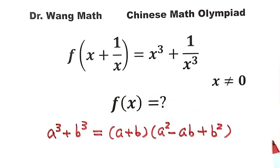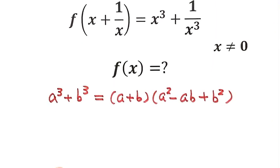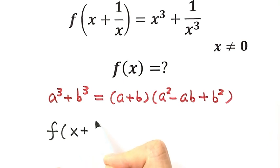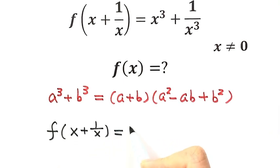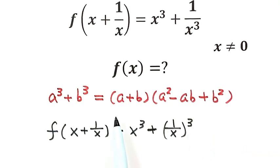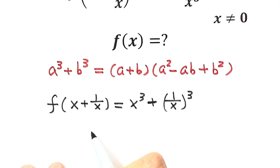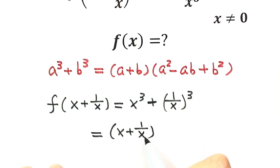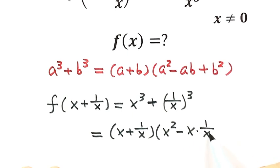So now let's start from the function. Given f of x plus 1 over x equals x to the third plus 1 over x to the third, we can write that as x to the third plus 1 over x to the third. Applying the sum of cubes formula, it equals x plus 1 over x, times x squared minus x times 1 over x plus 1 over x squared.